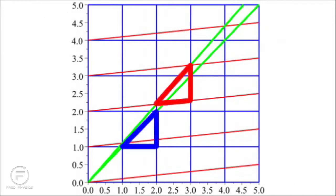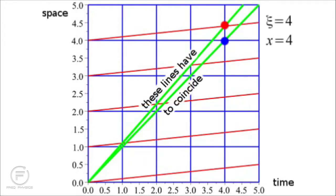Looked at another way, we have two lines both supposedly representing the same physical wave front. In the Latin frame, one unit of time and one unit of displacement defines one green line from the blue triangle. In the Greek frame, one unit of time and one unit of displacement defines the red triangle and a second green line. But the Michelson-Morley experiment tells us that these two lines have to coincide — both frames of reference have to measure the same speed of light.